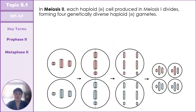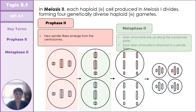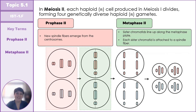In meiosis II, each haploid cell produced during meiosis I divides again, starting with prophase II. New spindle fibers emerge in each daughter cell, preparing to line up and pull chromosomes apart. This leads to metaphase II, where this time it is the sister chromatids lining up along the metaphase plate, with each sister chromatid attached to a spindle fiber.